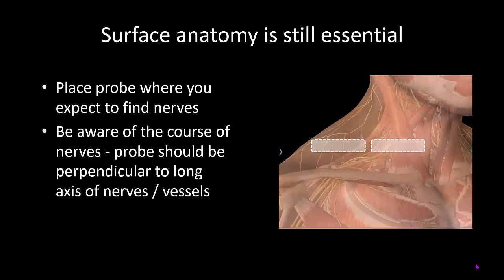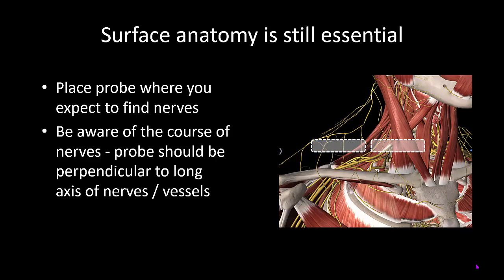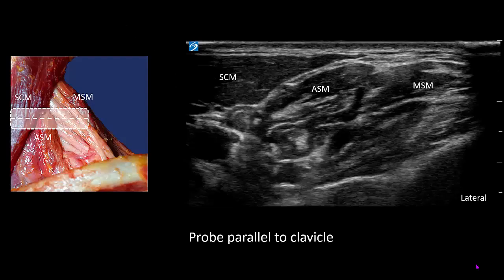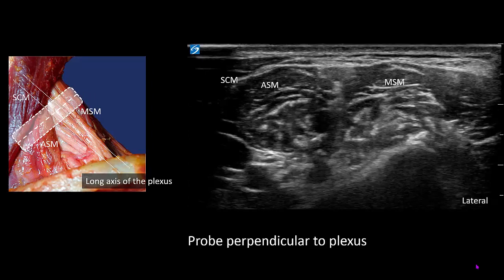This example of scanning for the roots in the interscalene groove illustrates this. If the probe is too lateral, you won't see any nerves, and if it is parallel to the clavicle, you may actually be oblique to the course of the plexus. This gives you a picture which is not what we usually expect to see. We are still over the interscalene groove between the anterior and middle scalene muscles, but we are oblique to the long axis of the plexus, and therefore the roots have this oval, stretched-out appearance. If we rotate the probe to bring it perpendicular to the long axis of the plexus, we now have the typical hypoechoic circles that represent the roots of the brachial plexus at the interscalene level, making recognition much easier.